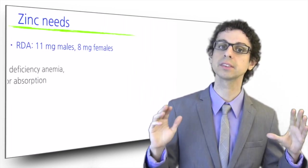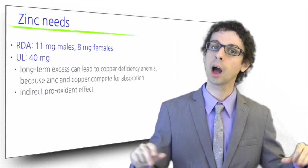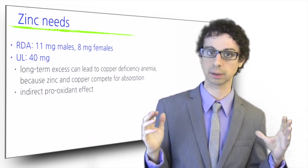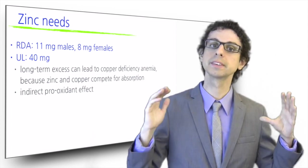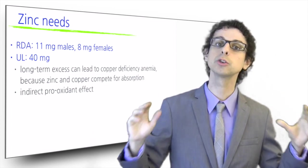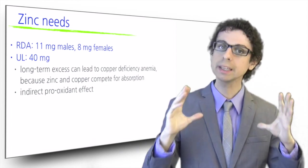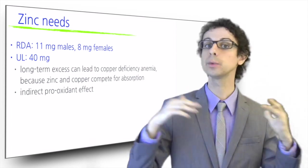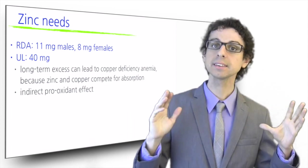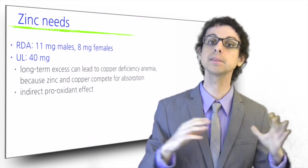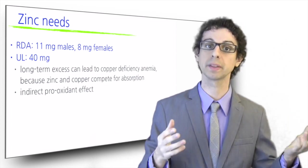The upper limit for zinc is 40 milligrams. Although zinc does not cause serious acute toxicity symptoms, chronic use of zinc supplements above the upper limit can lead to copper deficiency anemia because zinc and copper compete for absorption and one will displace the other. Excess zinc can also have an indirect pro-oxidant effect by displacing copper and iron from metallothionein.